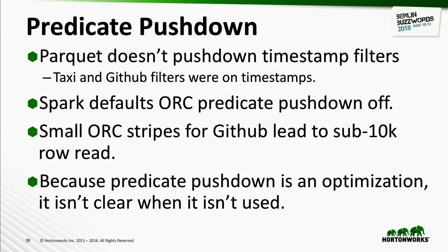Parquet doesn't push down timestamp filters. Spark defaults ORC predicate pushdown to off — you need to turn that on. The small ORC stripes for GitHub meant we ended up reading less than 10,000 rows. The file formats aren't very good about telling you when optimization has been turned off — it took actually looking at how much data was read before I was sure the predicate pushdown had happened.